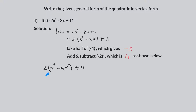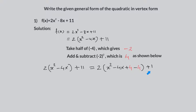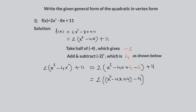2 times x squared minus 4x plus 11 is equal to 2 times x squared minus 4x plus 4, minus 4 plus 11. These first three terms form a perfect square trinomial, giving 2 times x squared minus 4x plus 4. By grouping the first three terms, we can rewrite this expression as shown here.